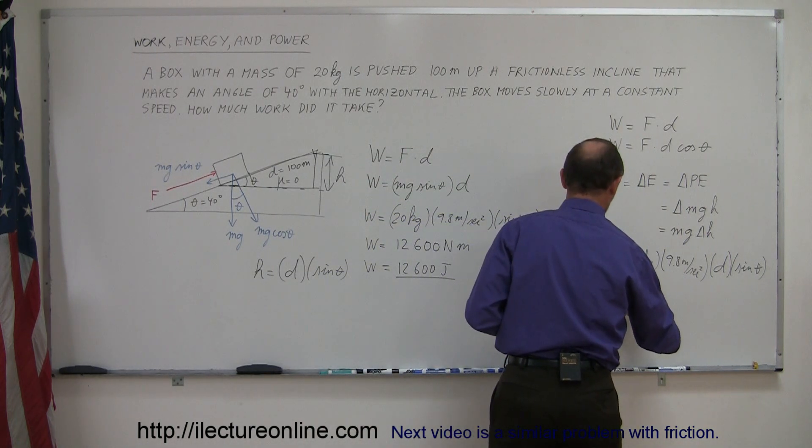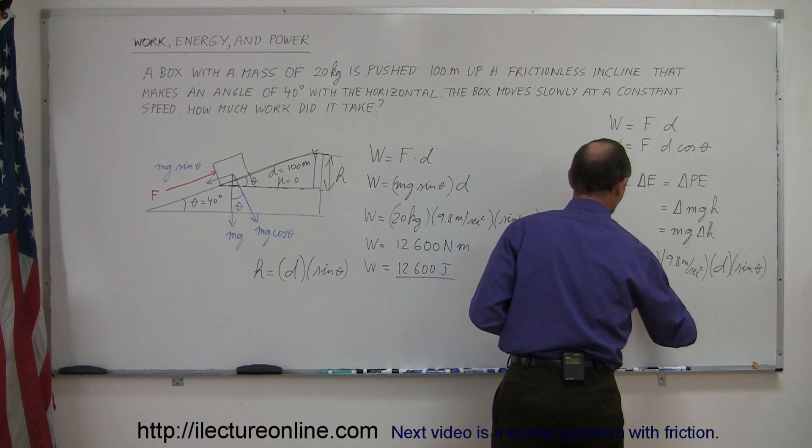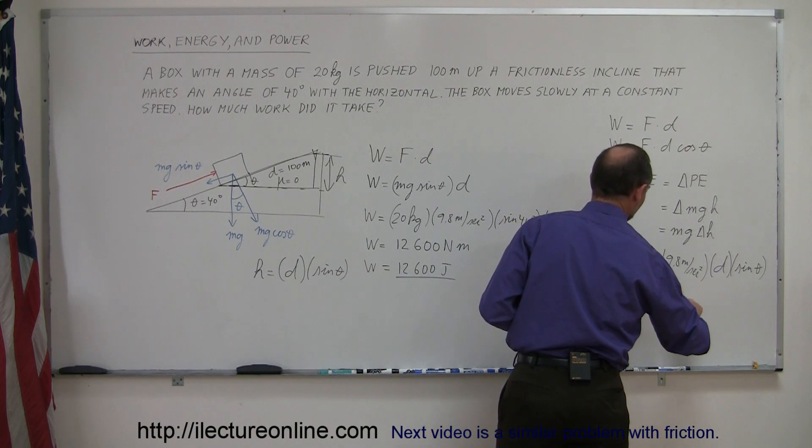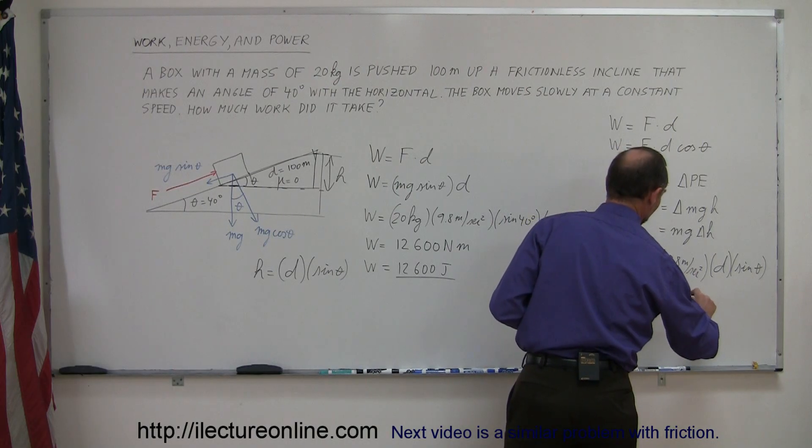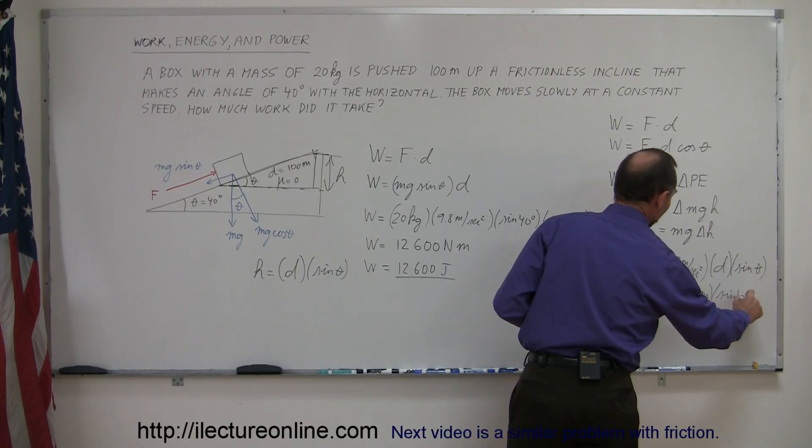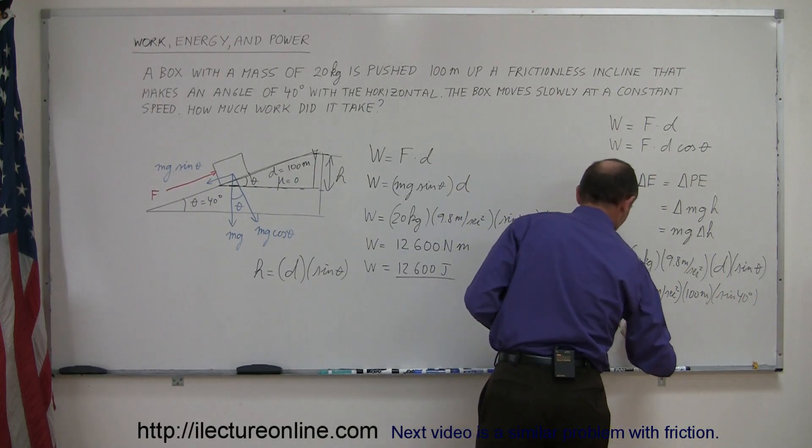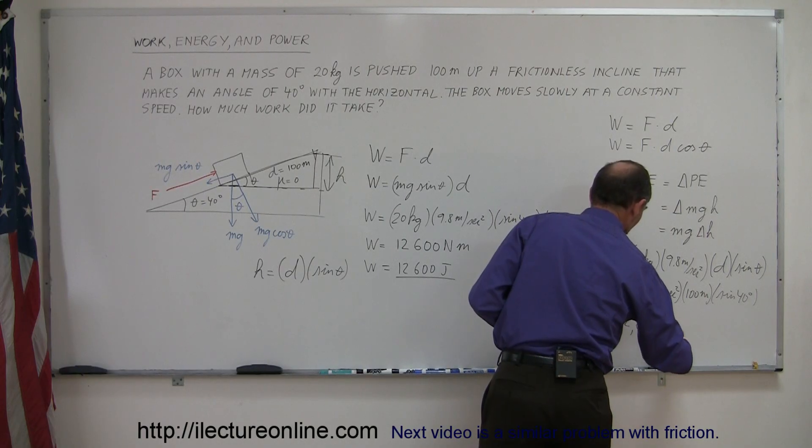Work done equals 20 kilograms times 9.8 meters per second squared times the displacement, which is 100 meters, times the sine of 40 degrees, and again you'll get the exact same answer as before, 12,600 joules.